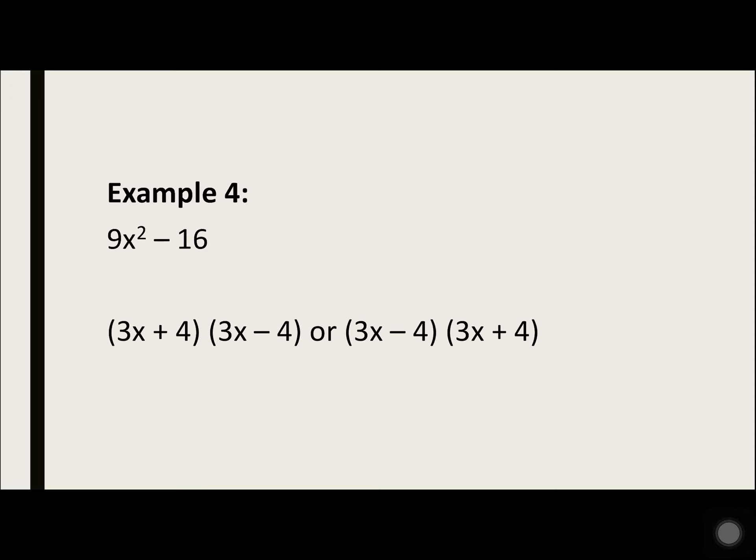Example 4: 9x squared minus 16. 9x squared is 3x times 3x, and 16 is 4 times 4. So you either have 3x plus 4 times 3x minus 4, or 3x minus 4 times 3x plus 4.